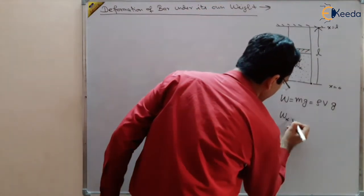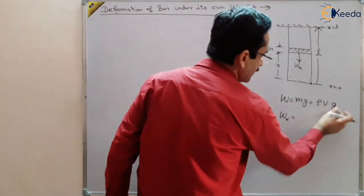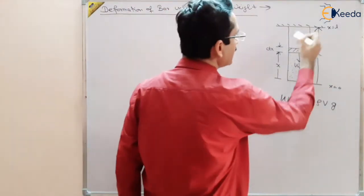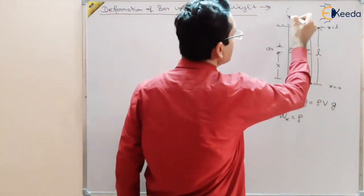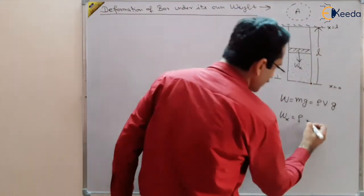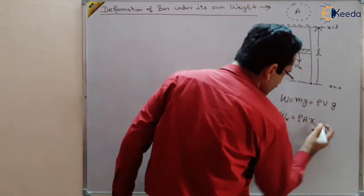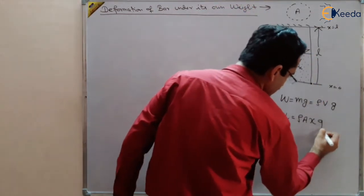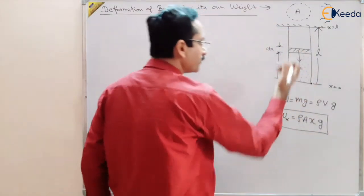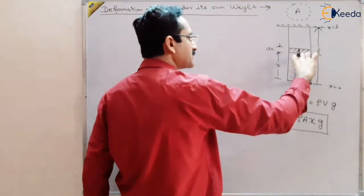wx equals the mass of the dotted part multiplied by g, which is density × volume × g. Suppose this body has area of cross section A, so volume = A × x. Therefore wx = ρ × A × x × g. This is the weight due to which the body pulls down, and dx is elongating due to this dotted part of the body.